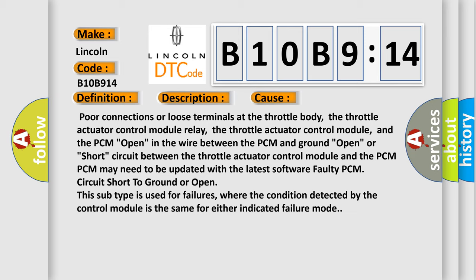Open or short circuit between the throttle actuator control module and the PCM. The PCM may need to be updated with the latest software. Faulty PCM, circuit short to ground or open. This subtype is used for failures where the condition detected by the control module is the same for either indicated failure mode.